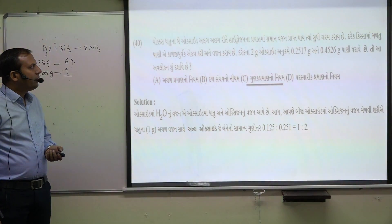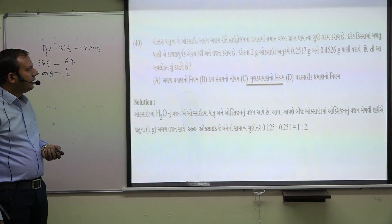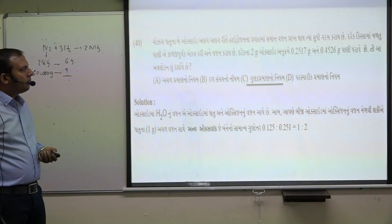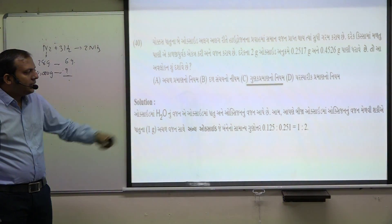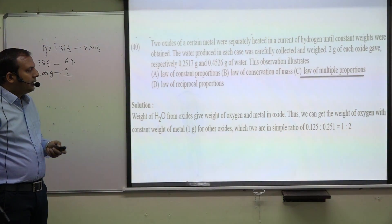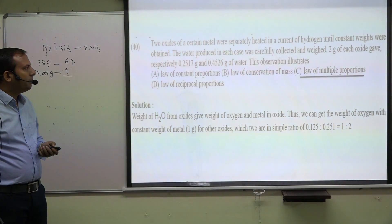Two metal oxides heated in hydrogen stream to get equal weight of metal. When the oxides are collected and weighed, the ratio is 0.2517 gram and 0.4526 gram. Taking the ratio 0.125 to 0.251, which is 1 to 2, this demonstrates the law of multiple proportions.